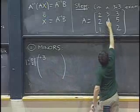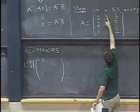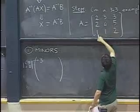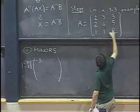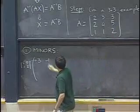Let's do the next one. So, for this entry, I delete this row and this column. I'm left with two, five, one, two. The determinant will be two times two minus five is negative one.